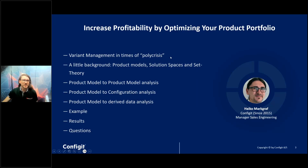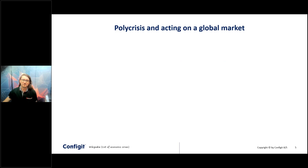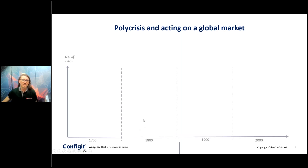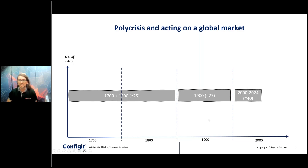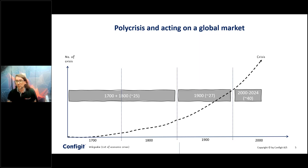Let's start with variant management in times of poly crisis. It feels like more and more often we are forced to handle crises. I looked it up in Wikipedia — between 1700 and 1800 there were around 25 crises, in the 1900s already 27, and just in the last 24 years we have already had 40 listed economic crises.